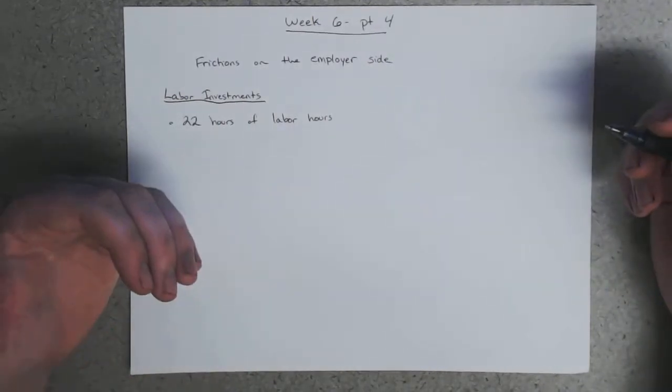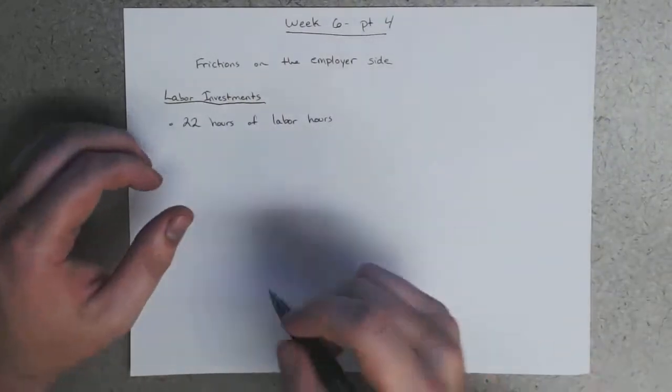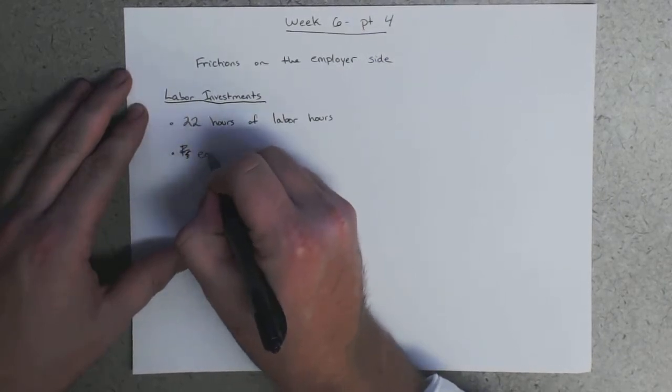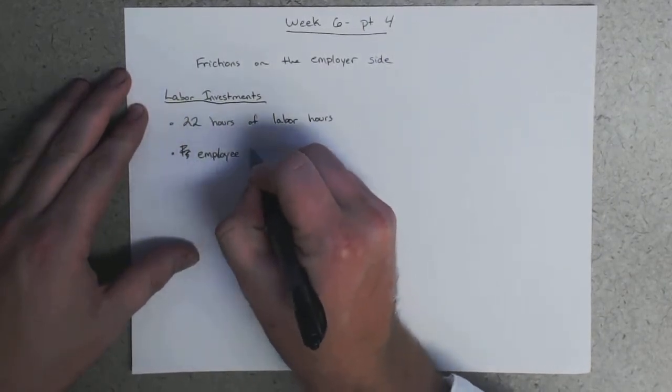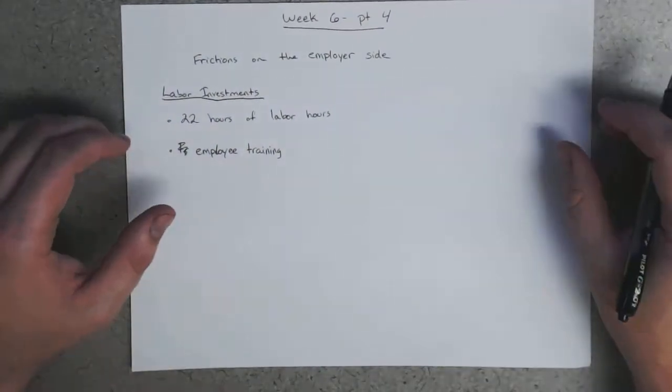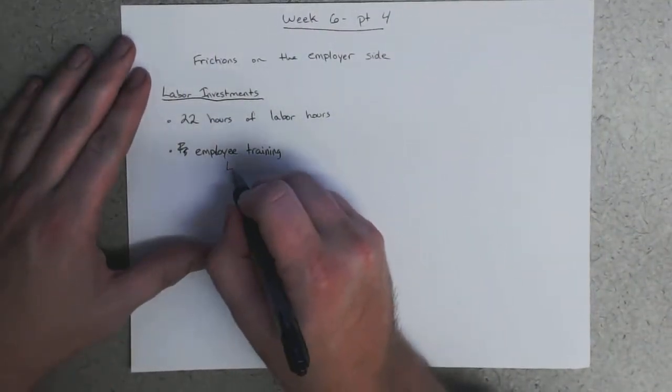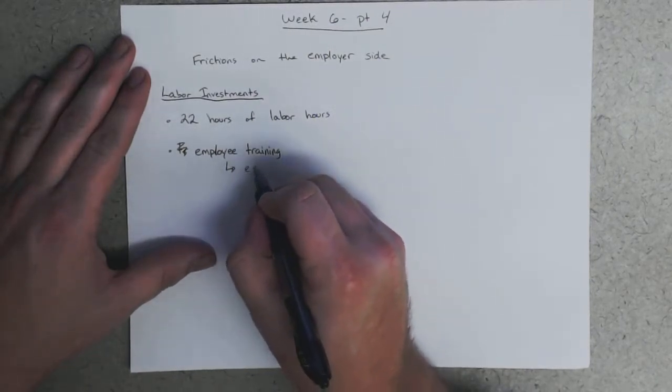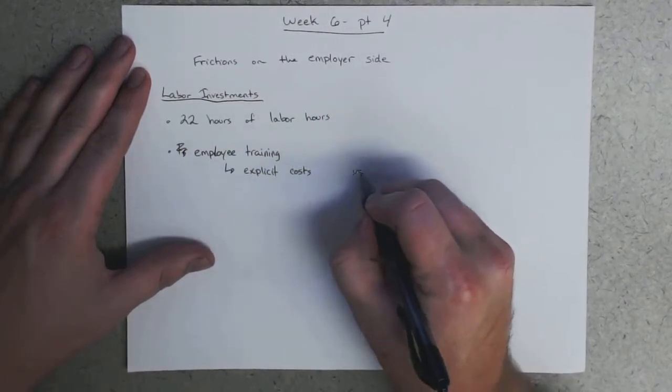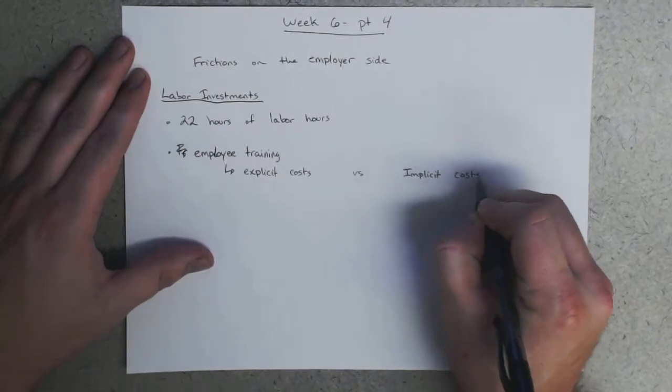Now, once the worker is hired and begins actually coming to work, there's also training programs. So we have to do employee training. And these can be formal or informal. And within these, we have what we call explicit costs and implicit costs.